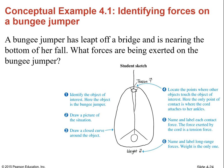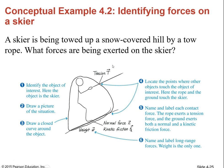For a bungee jumper, we have weight pulling down and tension pulling up. For a skier being towed up a snow-covered hill by a tow rope, the forces are: tension up at an angle, weight going straight down, a normal force at an angle perpendicular to the surface, and friction going along the surface in the opposite direction of the tension. You need to get used to drawing these diagrams because we're going to be drawing them a lot in class.